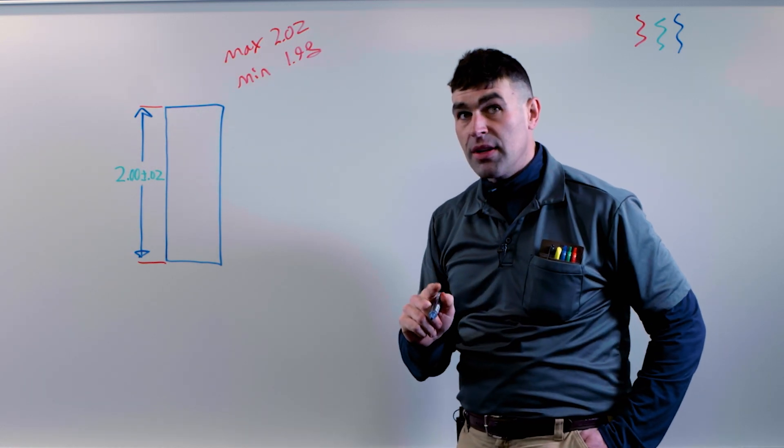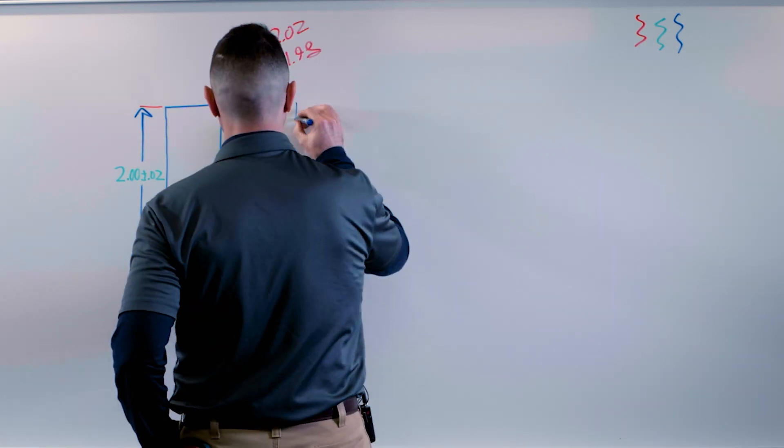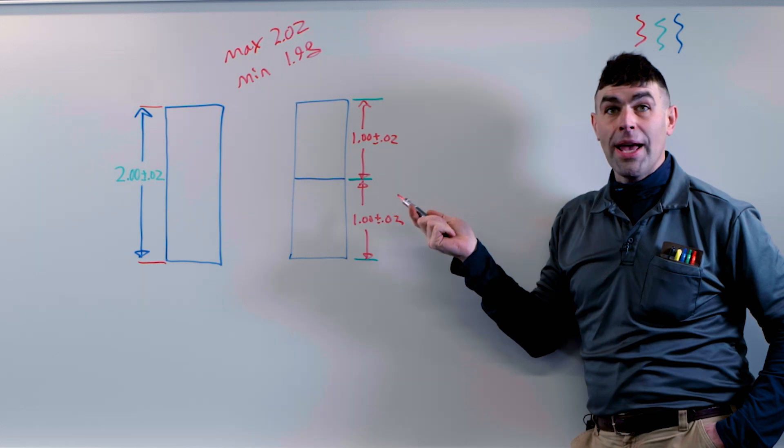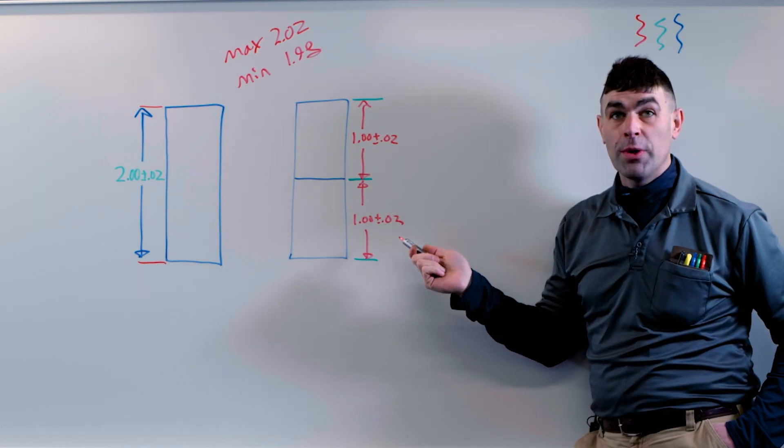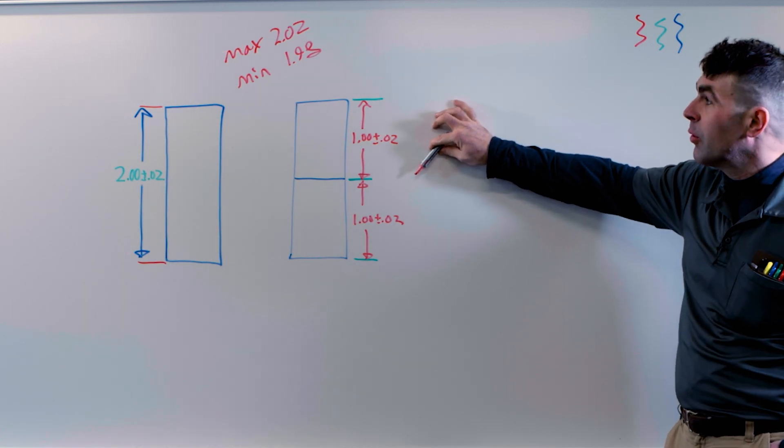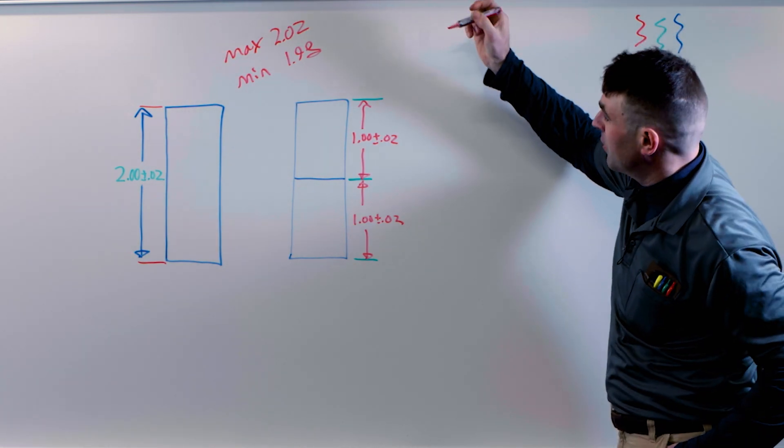Now what happens if we have more than one part? If we have more than one part and we use the same tolerance, because of tolerance stack up, we're going to go past our maximum.